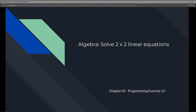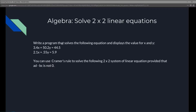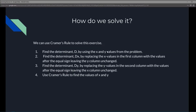This is Chapter 1, Programming Exercise 13 - Algebra: Solve a 2 by 2 Linear Equation. We're going to write a program that solves the following equations and display the values for x and y: 3.4x + 50.2y = 44.5 and 2.1x + 0.55y = 5.9. We can use Cramer's Rule to solve this 2 by 2 system of linear equations, provided that ad minus bc is not zero.